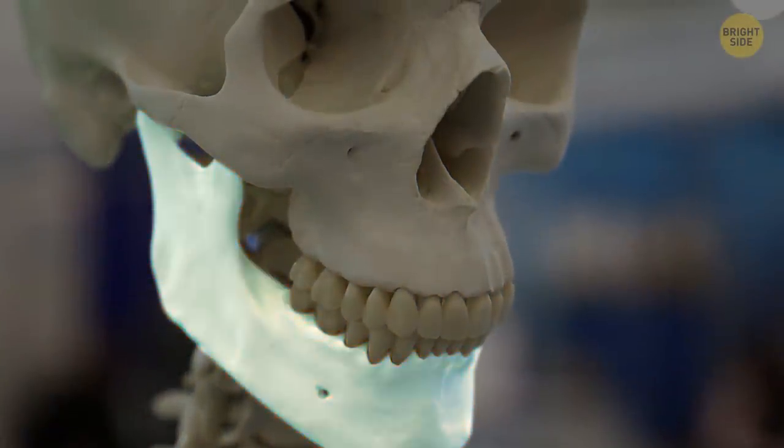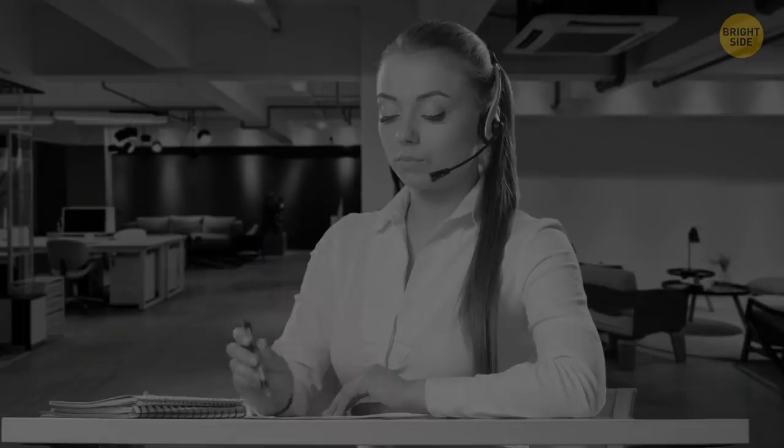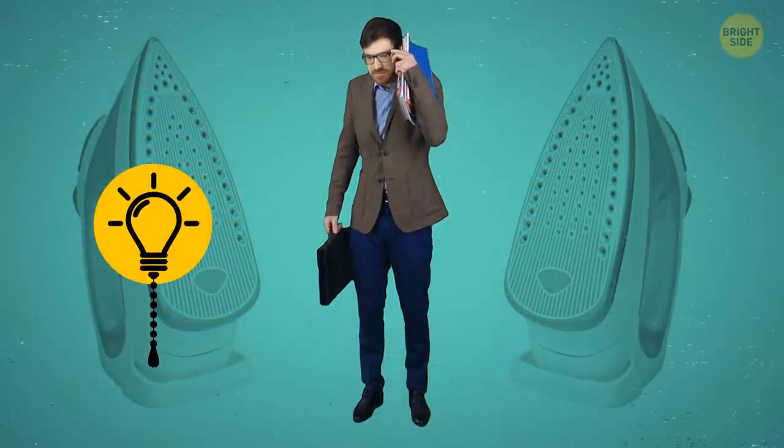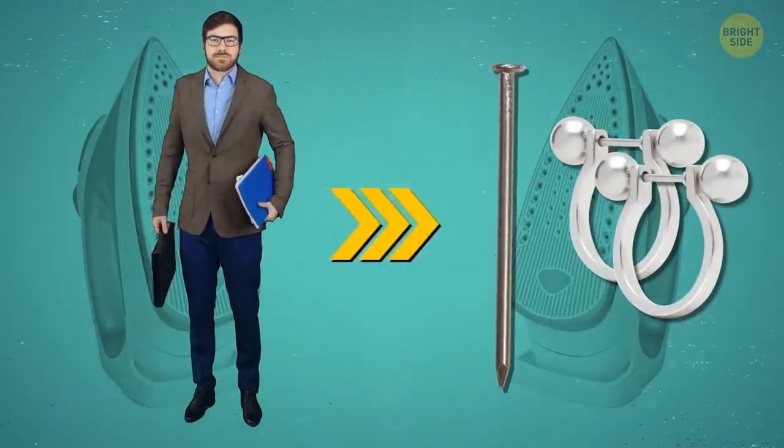The jawbone is the hardest bone we have in our body. When we're awake, our brain generates up to 25 watts, so the electricity your brain generates could power up a light bulb. If you could collect all the iron from your bodies, you would have enough of it to make a three-inch nail or some fancy earrings.